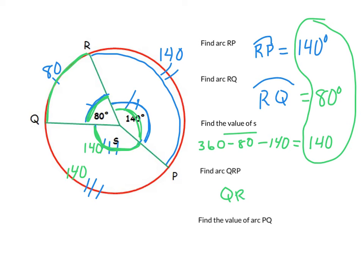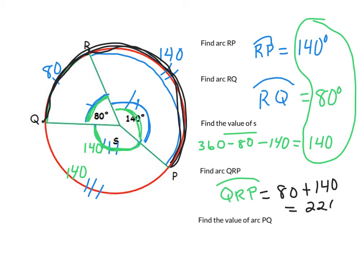The next question asks us to find arc QRP. So I want to find that. The way that I'm going to find it in our picture is to follow the order of the letters. I'm going to start at Q and then walk, like pretend I'm walking. So Q going to R, going all the way to P. So we can see that it's this big arc here and it's made up of the two smaller arcs that we found. So we just add those up. 80 plus 140, we get 220. And then the last question on this problem, we're going to find arc PQ. Arc PQ is here. We already have it marked up, so we didn't have to think too hard. The answer is 140 degrees.